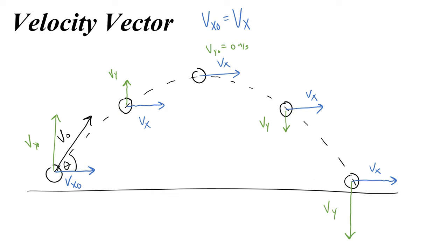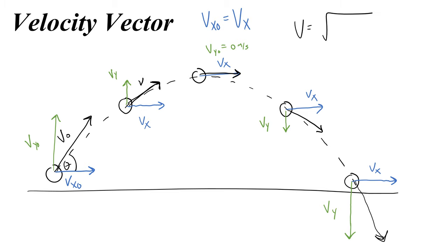The total velocity v is like the hypotenuse of a right triangle — the diagonal of the parallelogram formed by the components. It gets smaller until at the top it's just the x-velocity; then as it goes down it points at a different angle and grows larger. To find the magnitude, you do √(vx² + vy²), and to get the angle at any time, you do tan⁻¹(vy/vx).